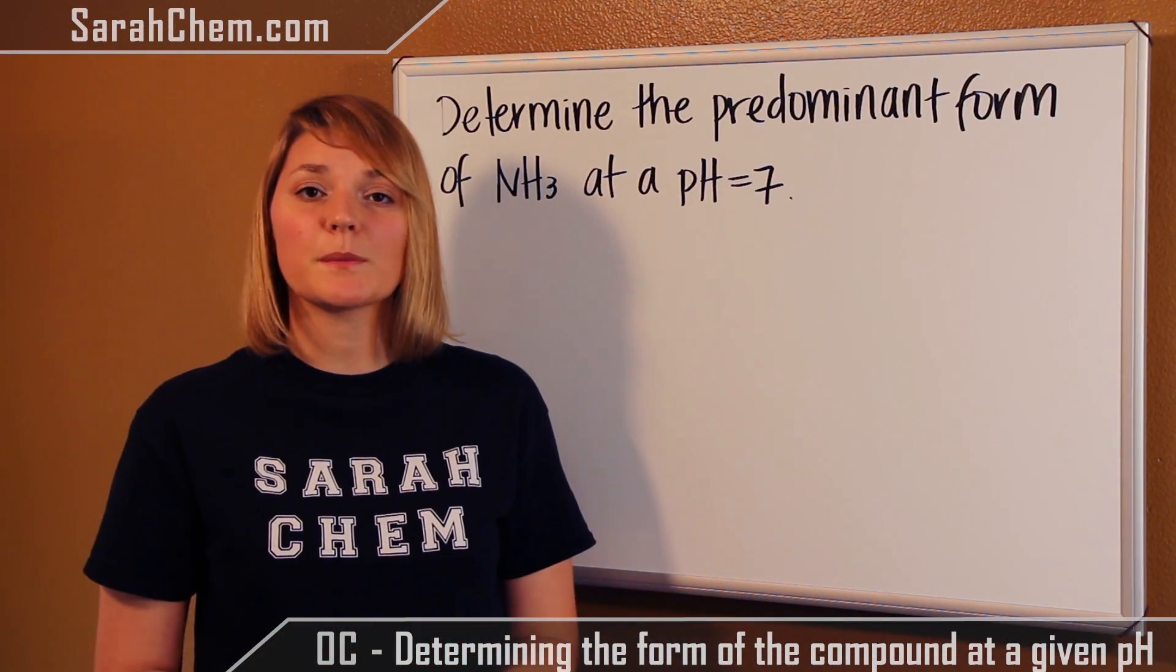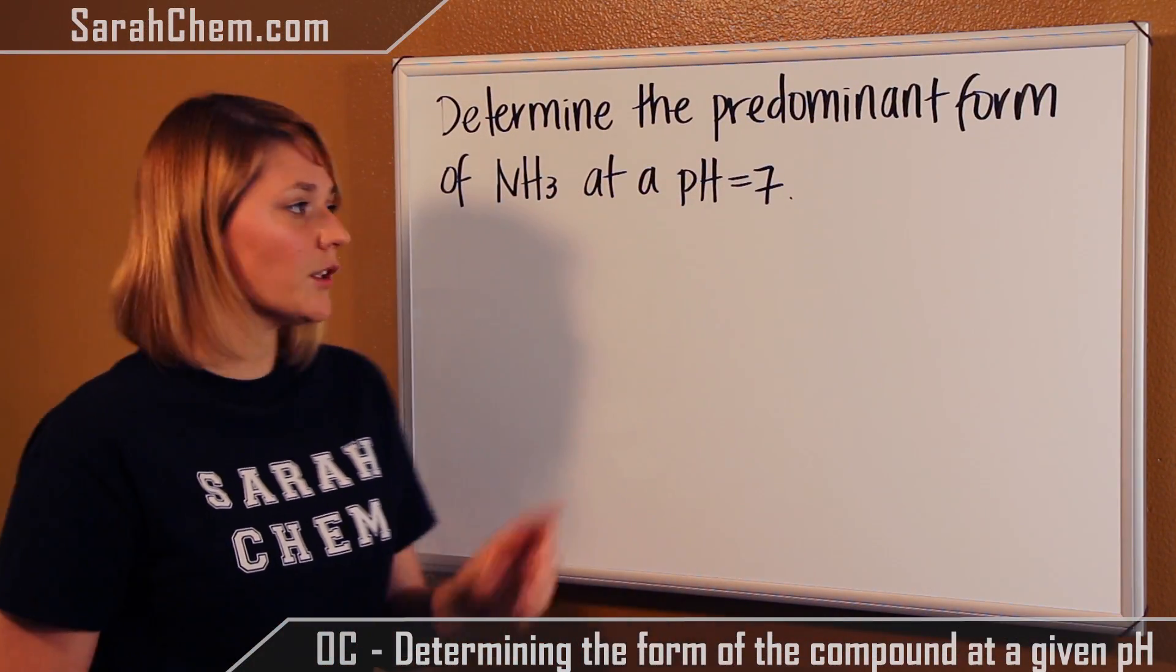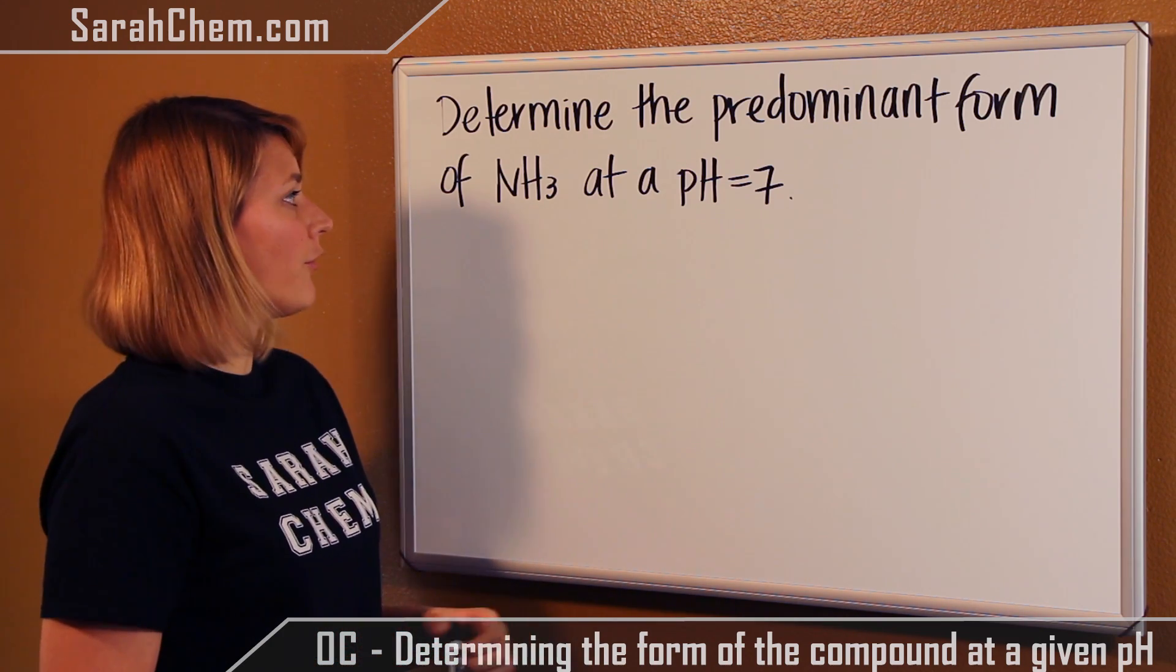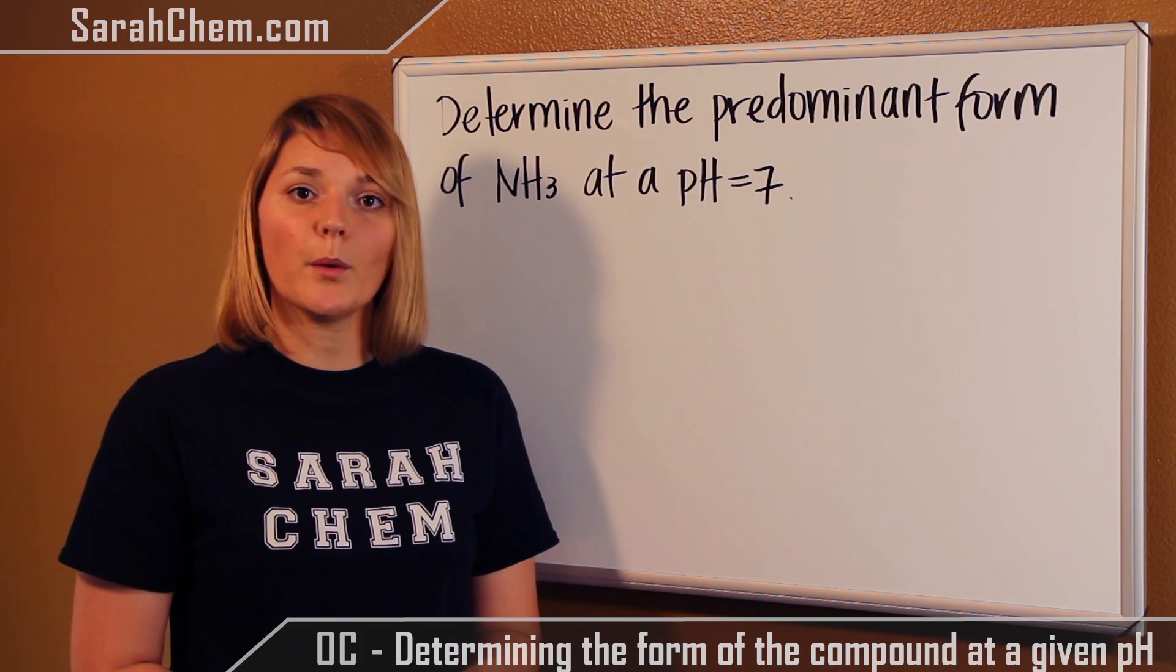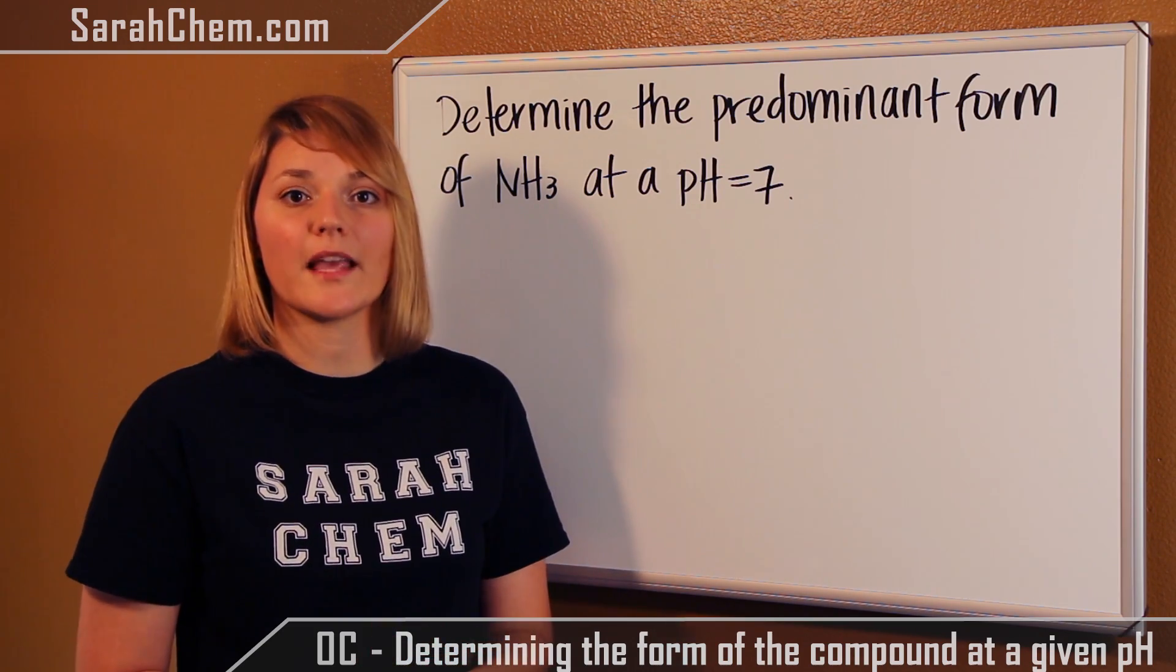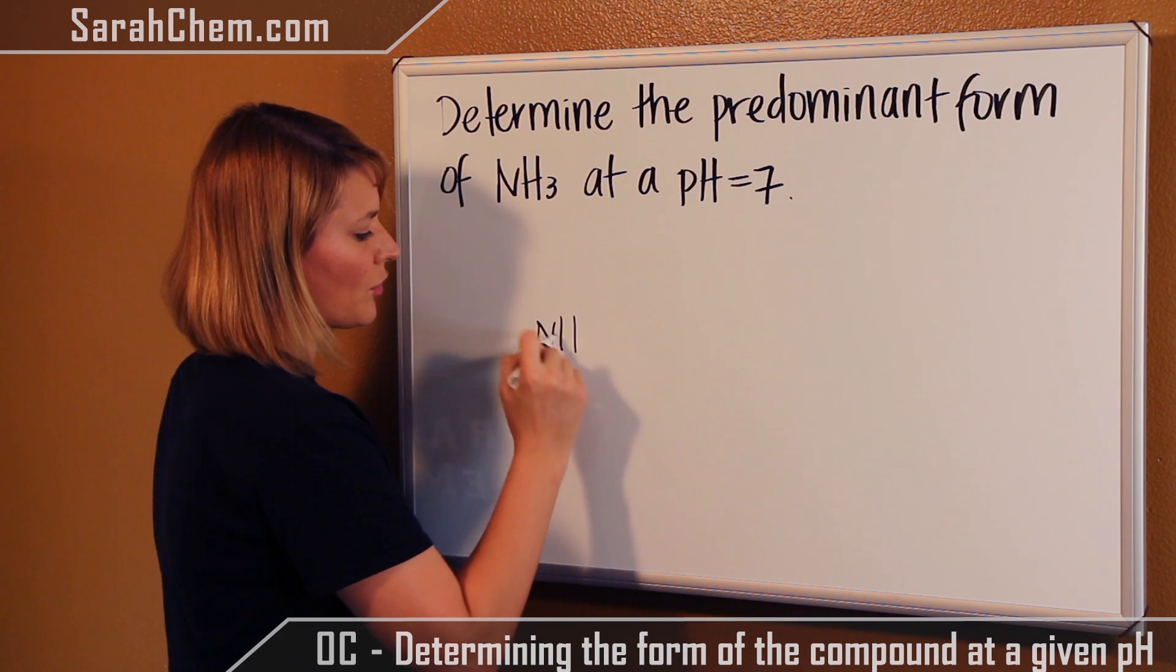Okay, so let's take a look at a specific example. If we take a look at this question, it says, determine the predominant form of ammonia at a pH equal to 7. So, the first thing we want to do is set up the pKa table. So, in the middle, we'll write out our NH3.